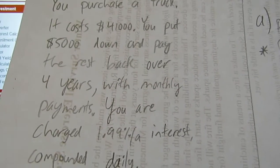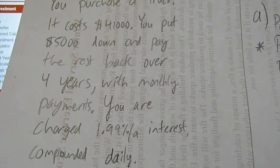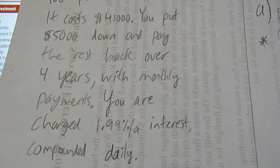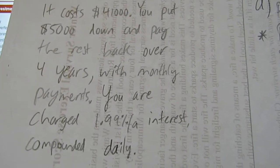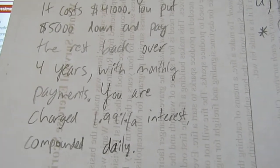So take a look at the word problem again. $41,000 but you put $5,000 down. It's for four years, monthly payments, 1.99% interest compounded daily.